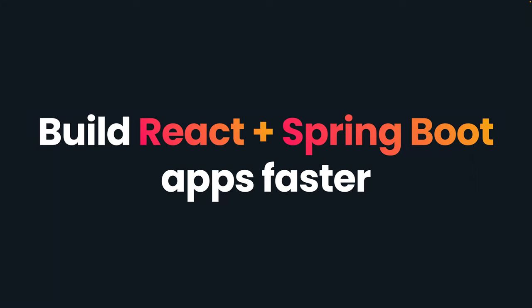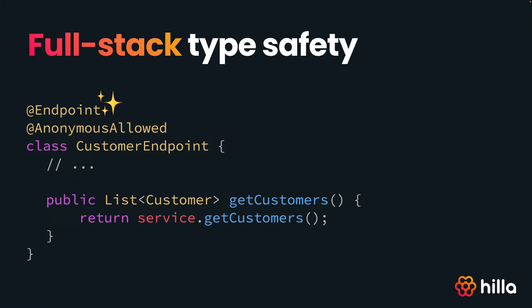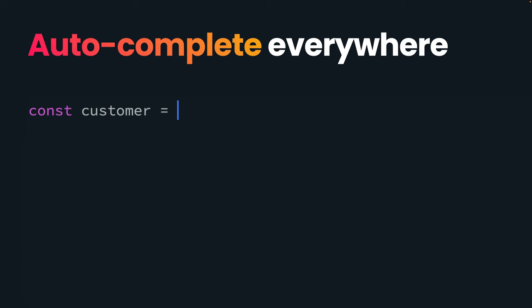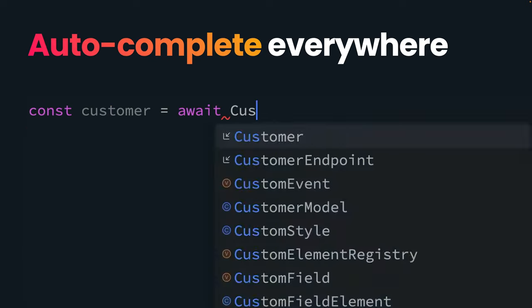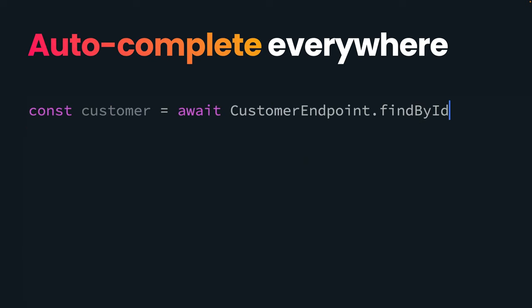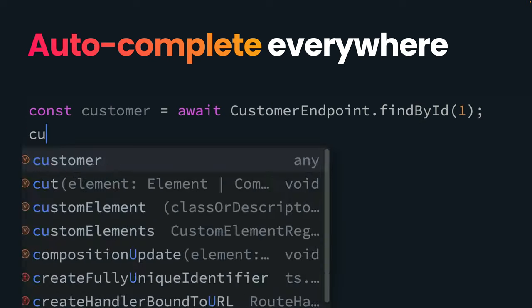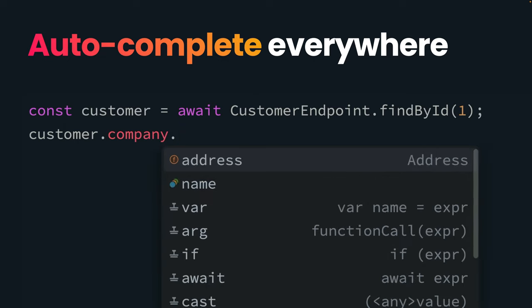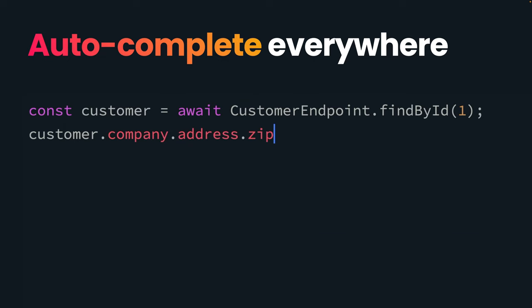HILA is a faster way to build React and Spring Boot applications. By annotating a class with an endpoint annotation, you make all the public methods available for you to call through TypeScript, along with their type information. So what that means is that you can now explore APIs through the IDE autocomplete and build your application faster.